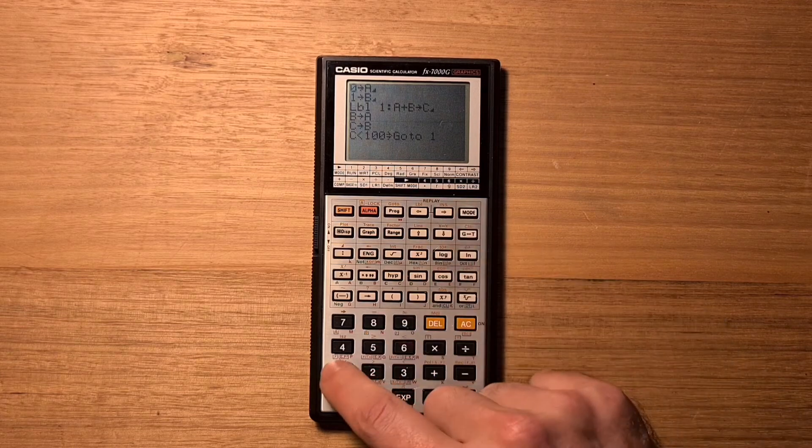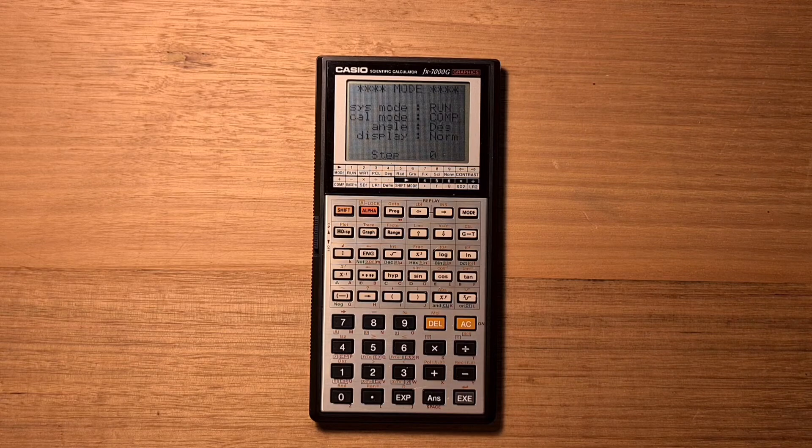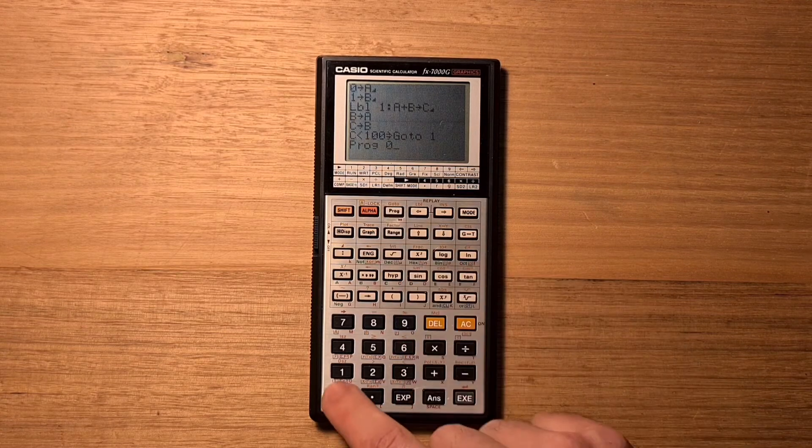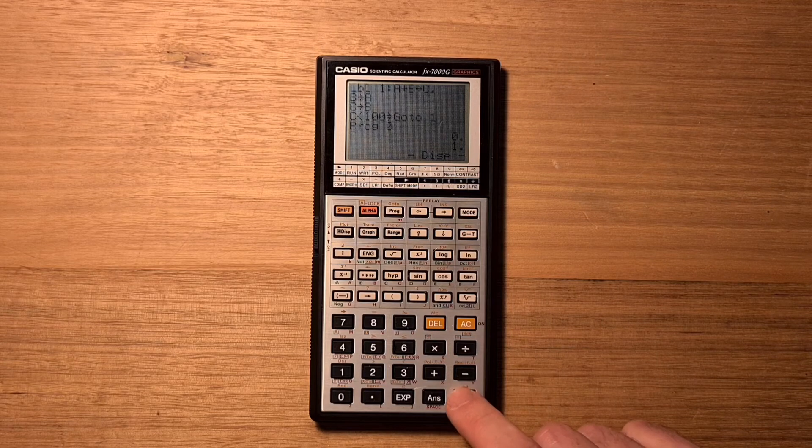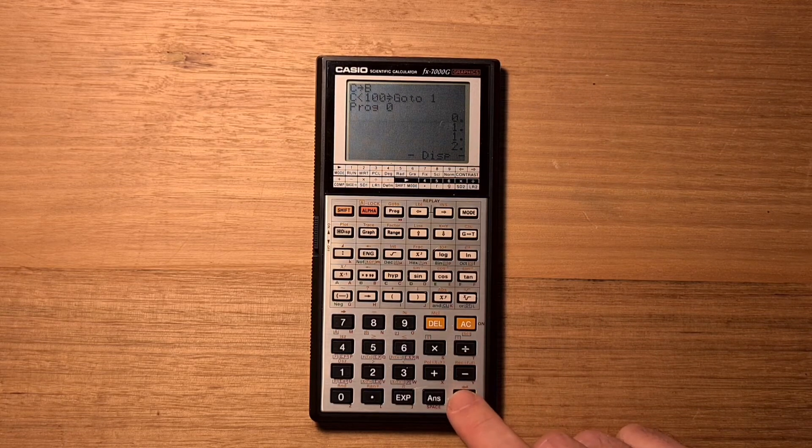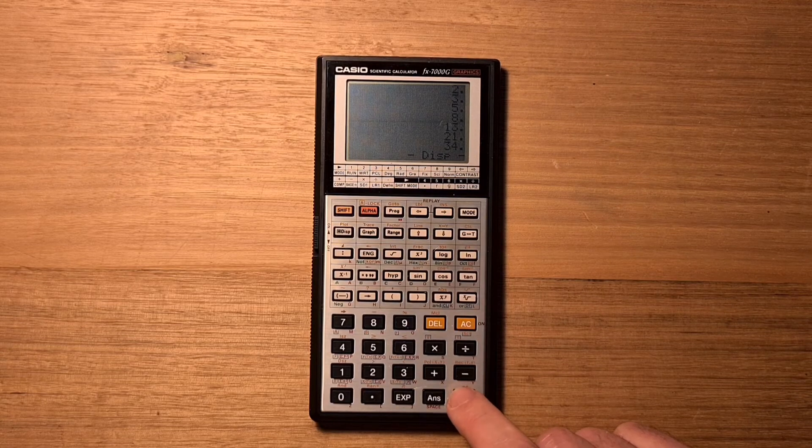So if we hit mode 1 to switch back to run mode, then we can type program 0 and execute. And we can hit exe to move through all the next numbers in the Fibonacci.